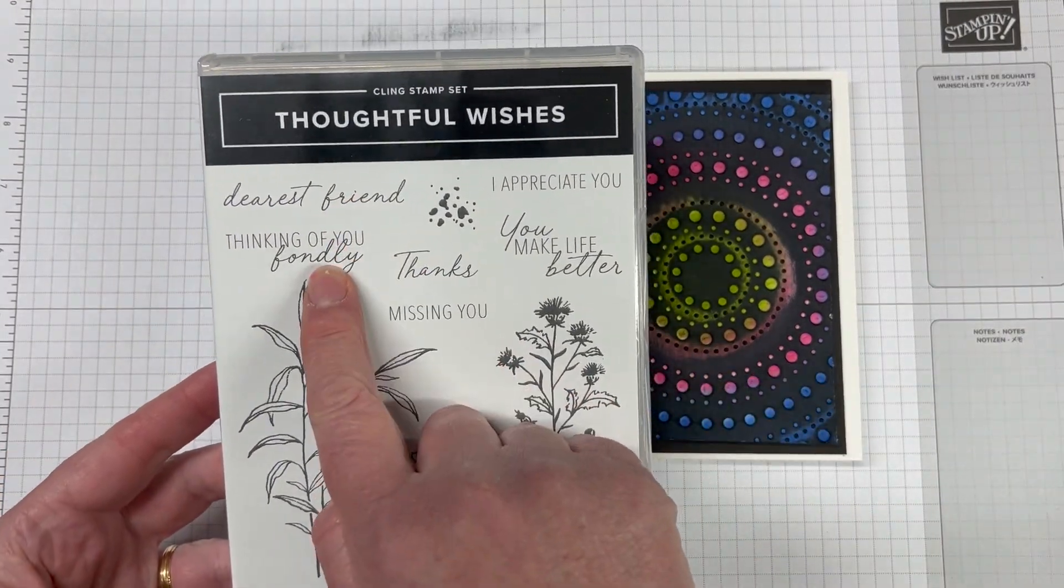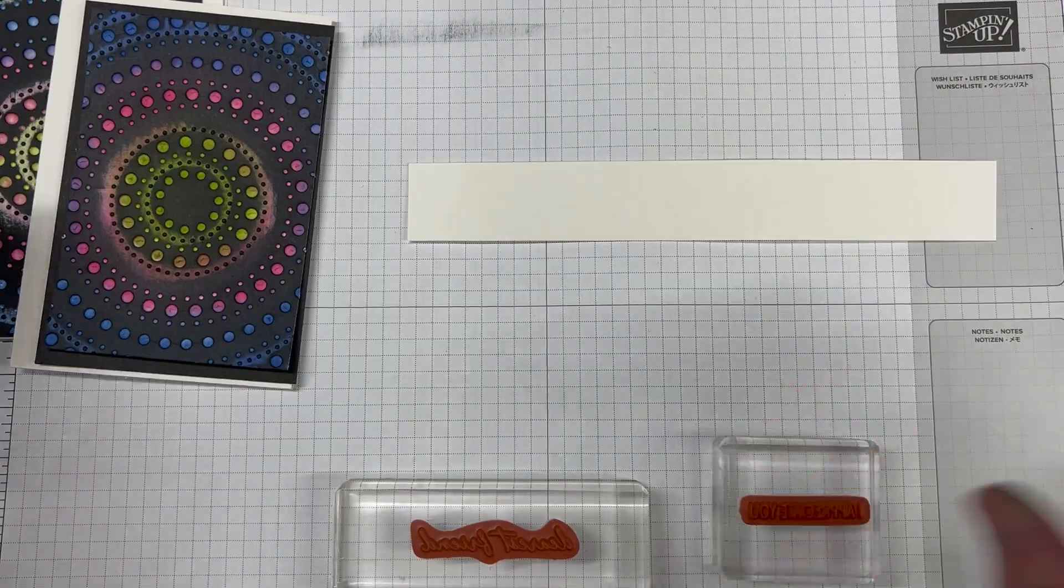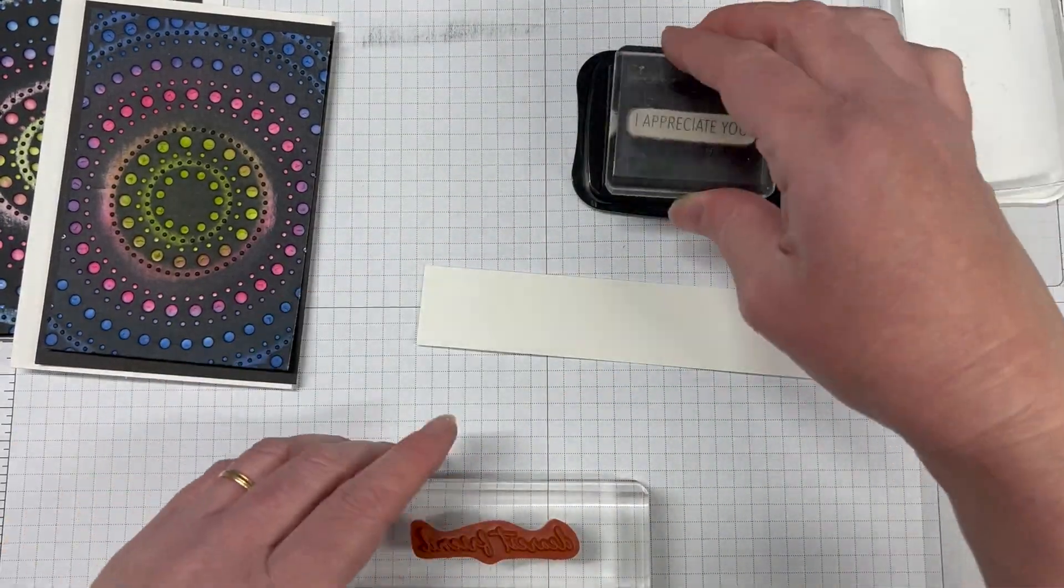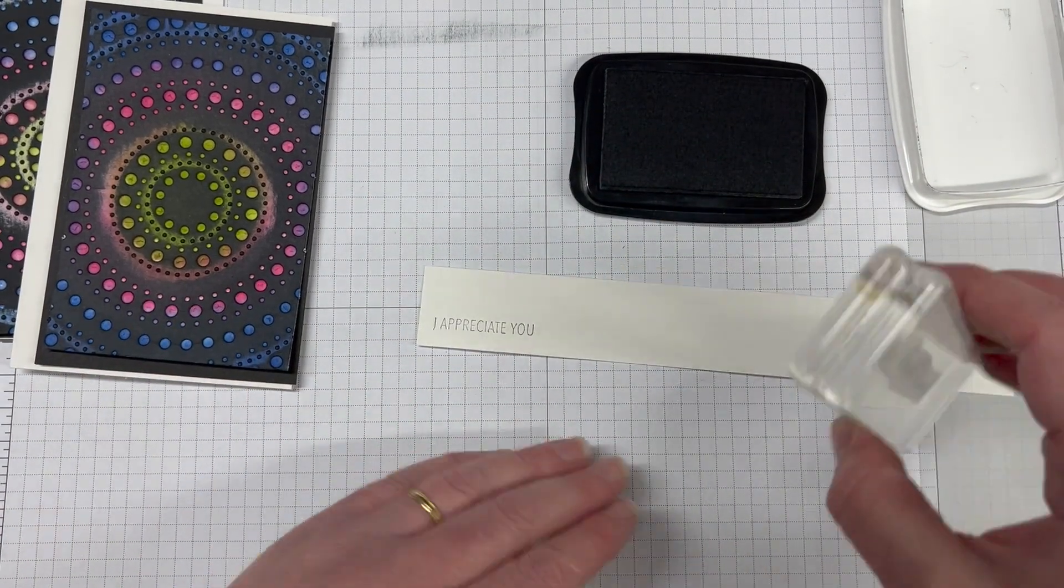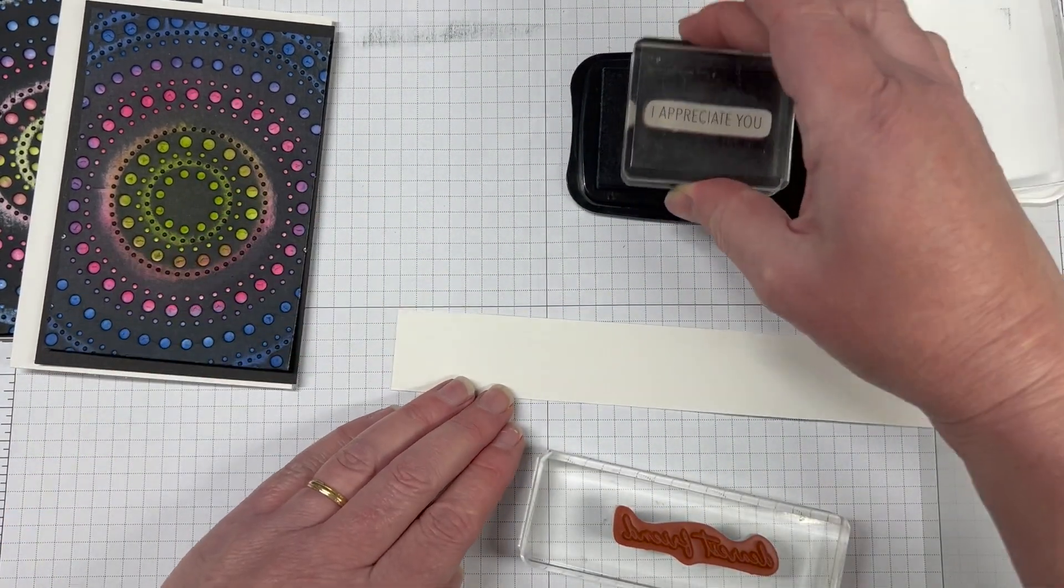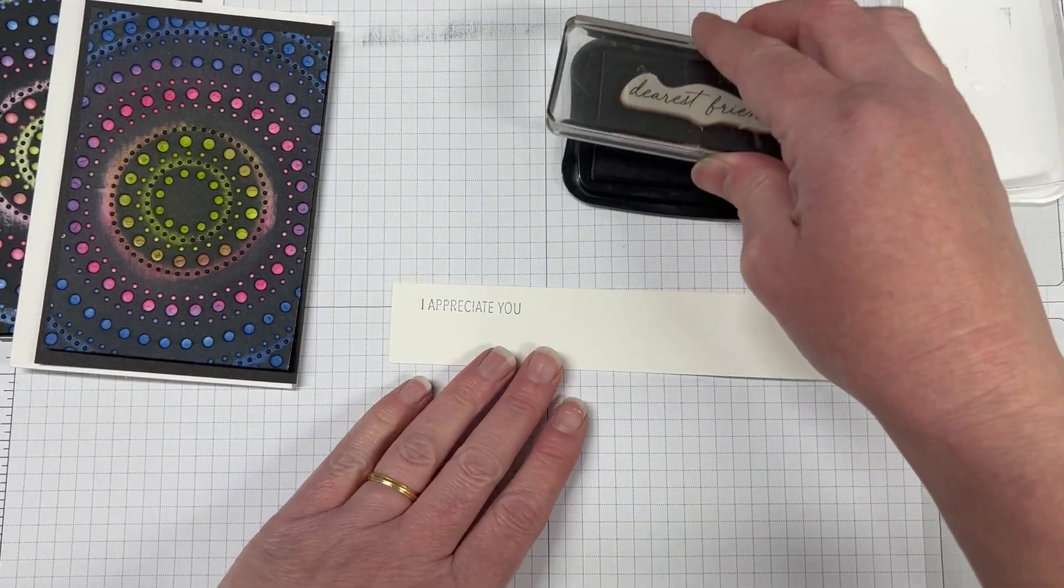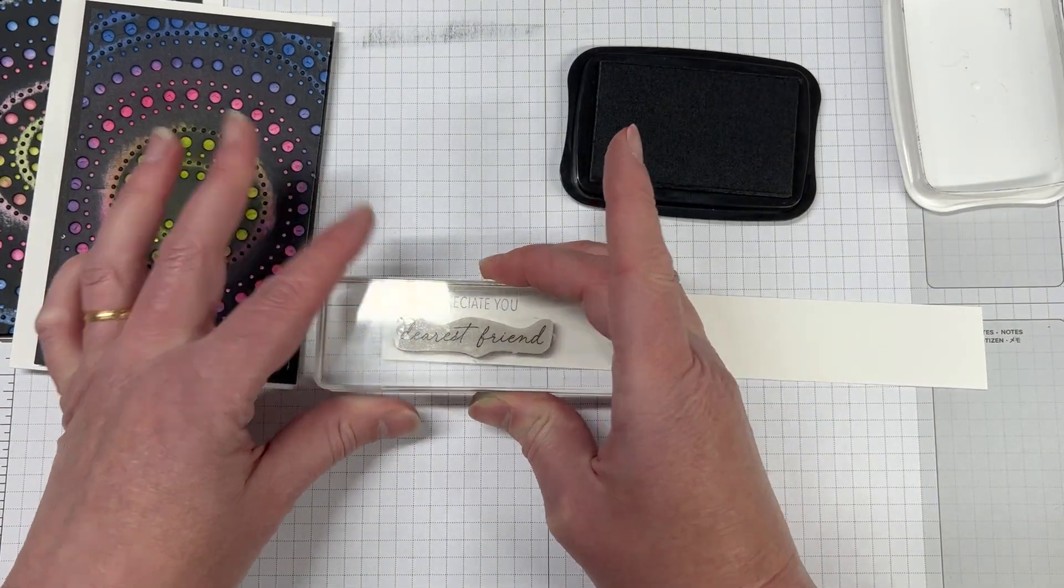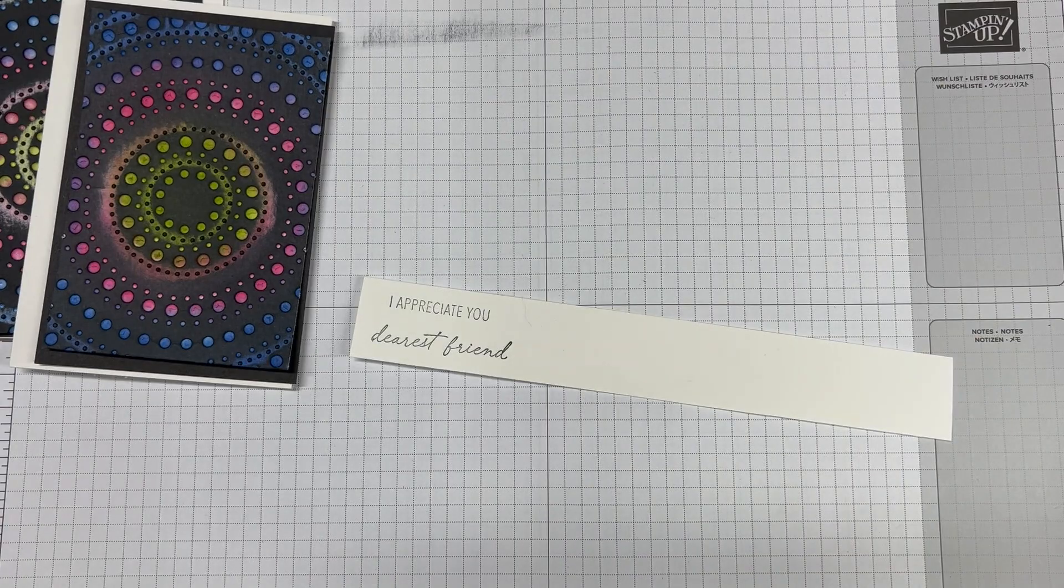Make sure whatever you're using, you have a reinker to be able to continue to reink your ink pad. Once I've cut these down so they measure the same, I've just made sure I've cut from both sides to keep that centerpiece in the middle of the card base. I've got this thoughtful wishes stamp set. This is a really nice stamp set, great for all your sentiments. I've gone with I appreciate you and dearest friend. You can't really go wrong with those sentiments, but there's lots of different sentiments in that stamp set.